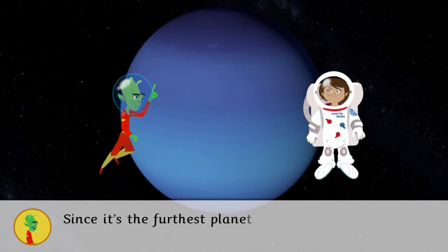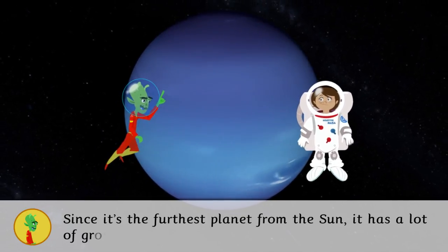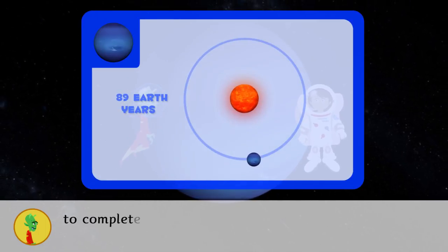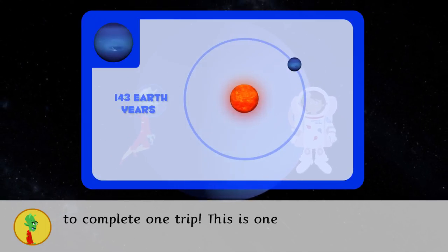Since it is the furthest planet from the Sun, it has a lot of ground to cover and takes 164 Earth years to complete one trip. This is one long year!